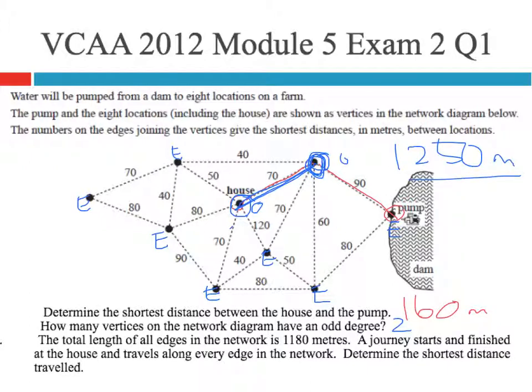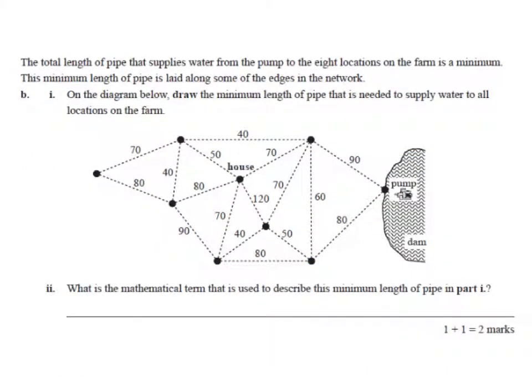So whilst it seems like a long and complicated question, if you understand the definitions behind it and the theory behind the two odd vertices, it's actually a very easy one to answer. And that's why it's in there in question one. The next part of the question then goes on to look at minimal spanning trees. So the total length of pipe that supplies water from the pump to the eight houses on the farm is a minimum. This minimum length of pipe is laid along some edges in the network. On the diagram below, draw the minimum length of pipe that is needed to supply all the locations on the farm.